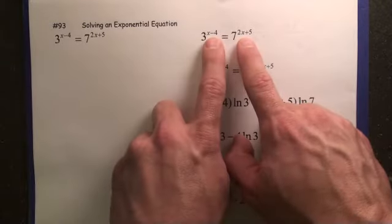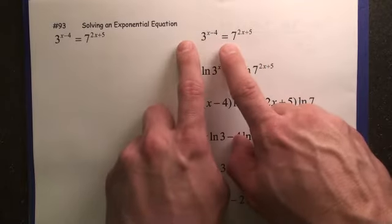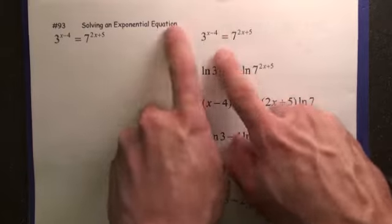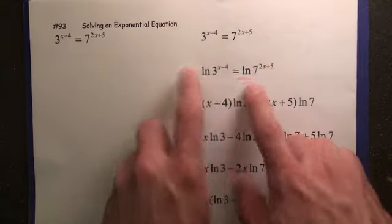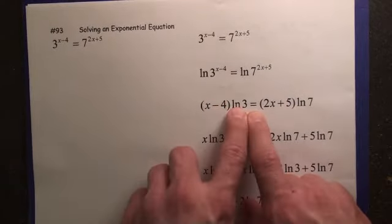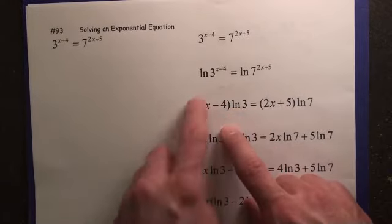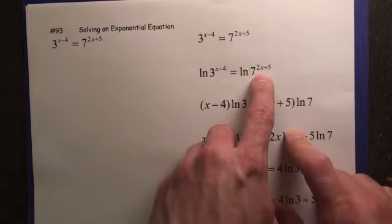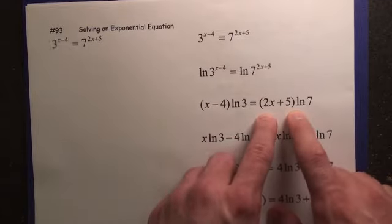Whenever you have exponents on both sides, if you take the natural log, you can always bring that exponent down. So we're going to do the ln of both sides. Now we're going to bring the exponent down in front. So x minus 4 in front of ln 3. Put the x minus 4 in parentheses. Same thing with the 2x plus 5. Put that in parentheses.